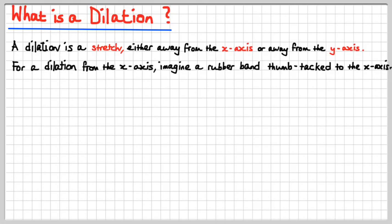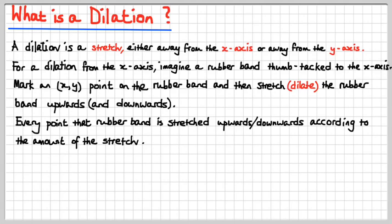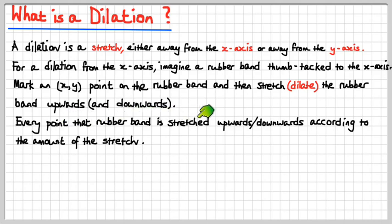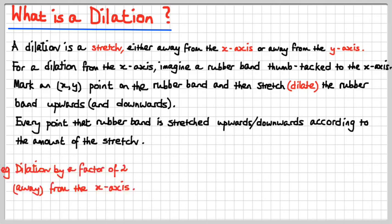For a dilation from the x-axis, imagine a rubber band thumbtacked to the x-axis. If you mark an x-y point on the rubber band and then stretch or dilate the rubber band upwards or downwards, every point you've marked gets stretched upwards or downwards according to the amount of the stretch. Dilation is a great big elastic band stretching, anchored at the x-axis or the y-axis.